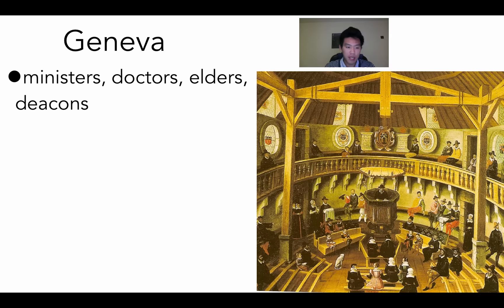Geneva was known as the City of Saints. Different church leaders had different roles: ministers preached, doctors studied scripture, elders instituted discipline, and deacons promoted charity. A few ideas Calvin put into Geneva when part of the leadership there: the political system was essentially established for the purpose of moral law and Christian community.